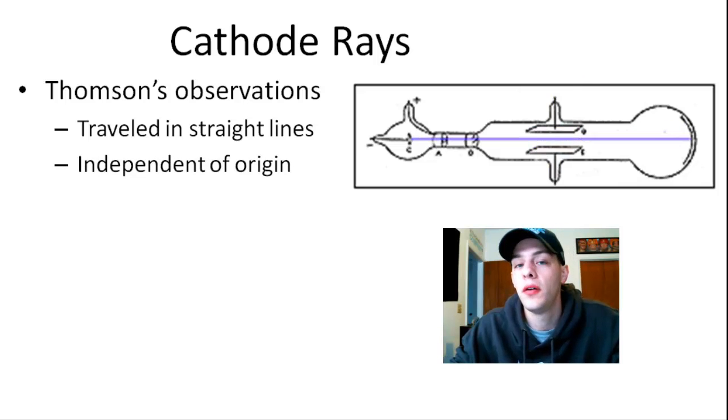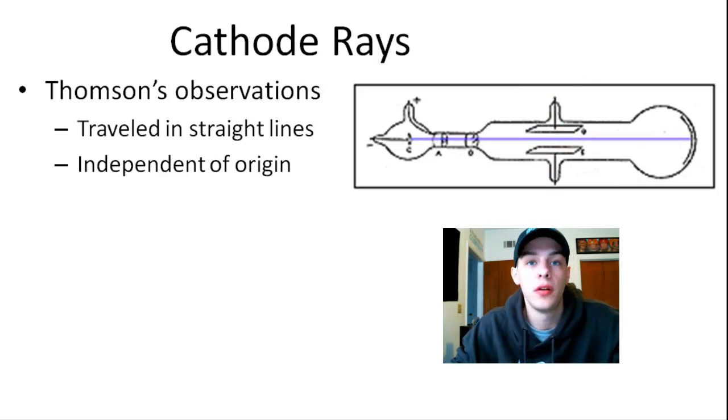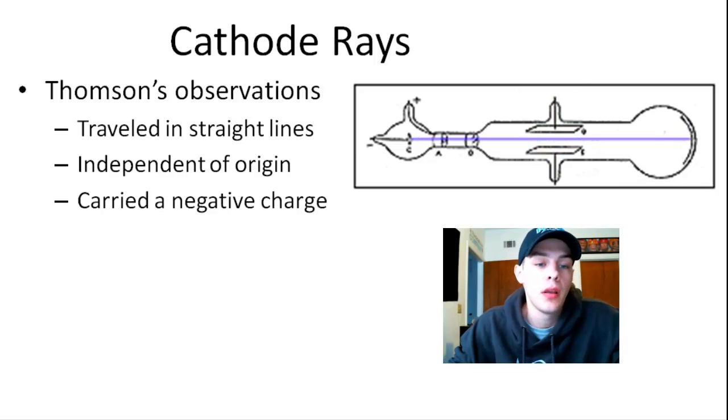Also, they were independent of the material from which they originated. So in other words, it didn't matter what metal, what glass tube you used, it didn't matter what electrodes you used—it could have been a zinc electrode, it could have been a copper electrode. Whatever electrode you used, it didn't matter. The cathode rays still had the same properties. So this piece of information actually suggested that they were indeed building blocks of atoms. And he also observed that they carried a negative charge. And the reason why this is significant is because atoms are neutral. So if there's a particle that carries a negative electrical charge, then that means that it must be a building block of an atom.